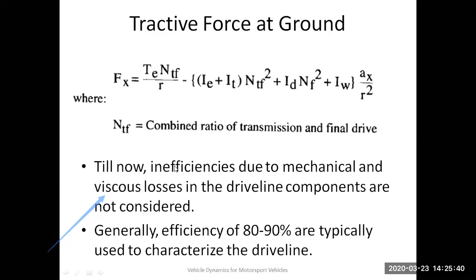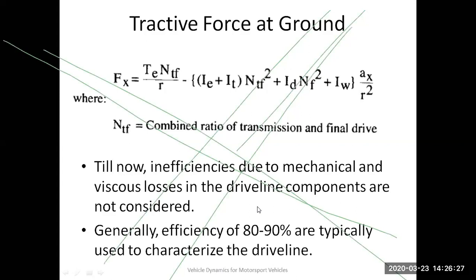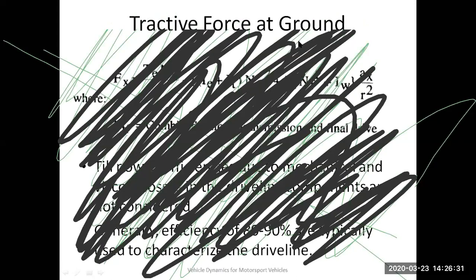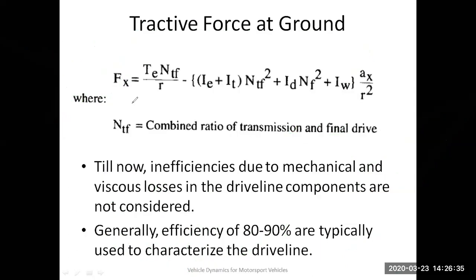These inefficiencies are due to mechanical and viscous losses. Viscous losses occur because of the interaction of the lubricating oil — even though oil reduces metal-to-metal contact friction between gear teeth, the oil itself has viscosity, so each layer of oil offers resistance to another layer sliding past it. These are the viscous losses in the driveline components. In this particular case, inefficiencies due to mechanical and viscous losses are not considered separately, and generally an efficiency of 80 to 90 percent is characteristic to the driveline of the vehicle being considered.